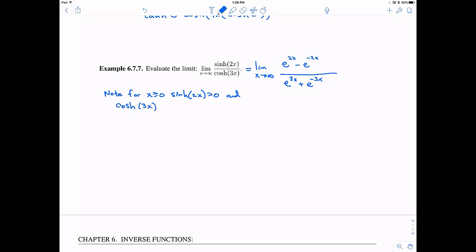So the first thing is that when x is greater than 0, actually hyperbolic sine and hyperbolic cosine are both greater than 0. Okay? And the 2x and the 3x don't make much of a difference. They're both going to be greater than 0.